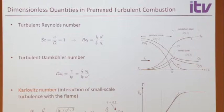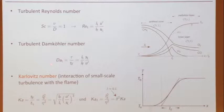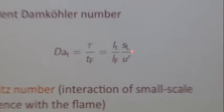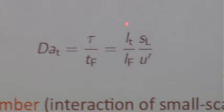We can also define a Damköhler number: it's a flow time scale divided by a chemical time scale. The chemical time scale equals the flame time scale, which is L_F divided by S_L. The flow time scale is L_T over U prime. Again, these are ratios of velocity scales and length scales.